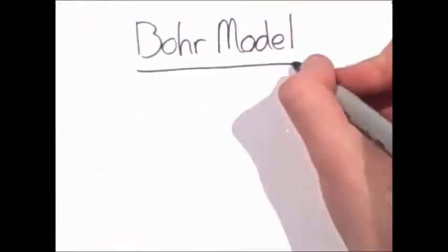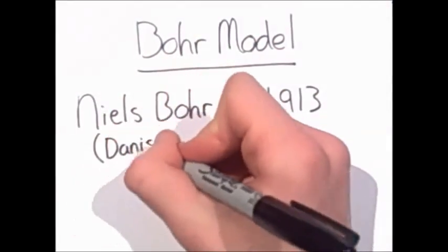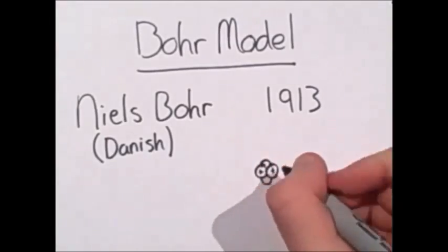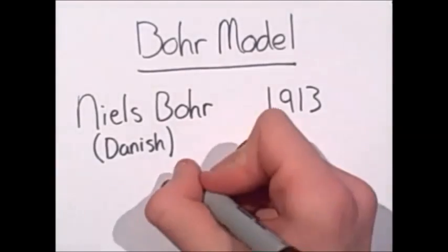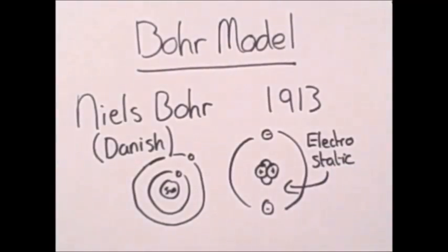Next up, we have the Bohr model. It was introduced by Niels Bohr in 1913, and it shows the atoms as being very small, which have a positively charged nucleus with the electrons orbiting around, much like our solar system, but with electrostatic forces instead of gravity.